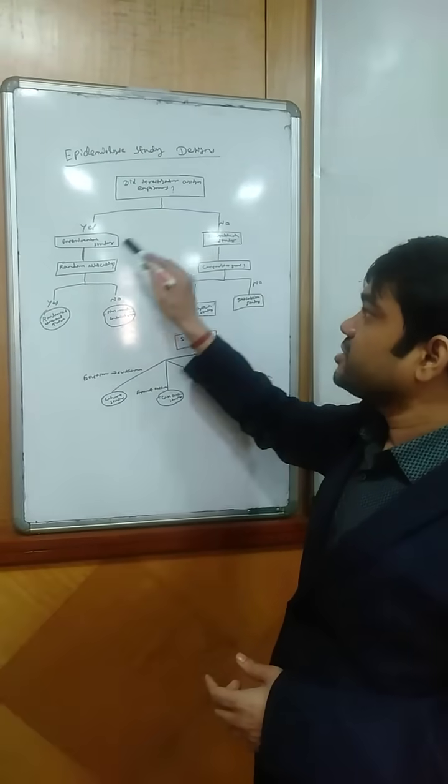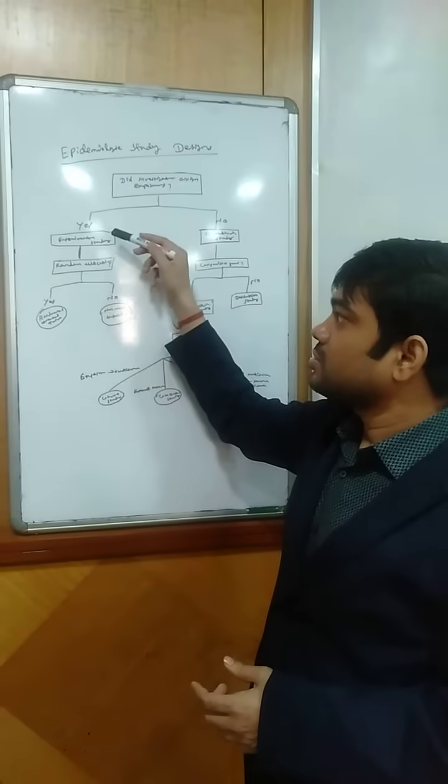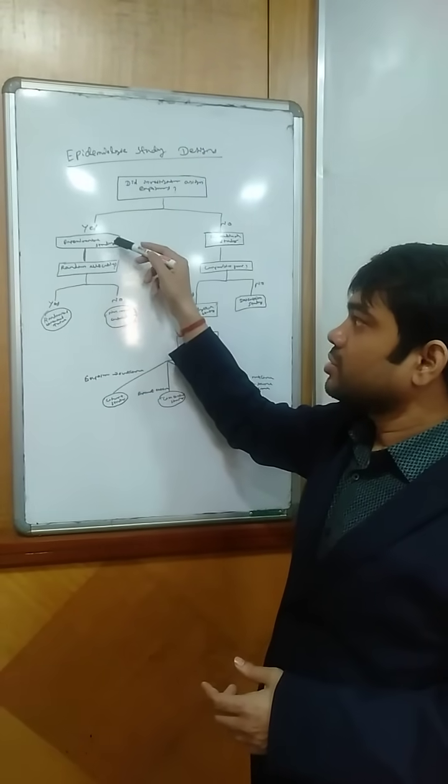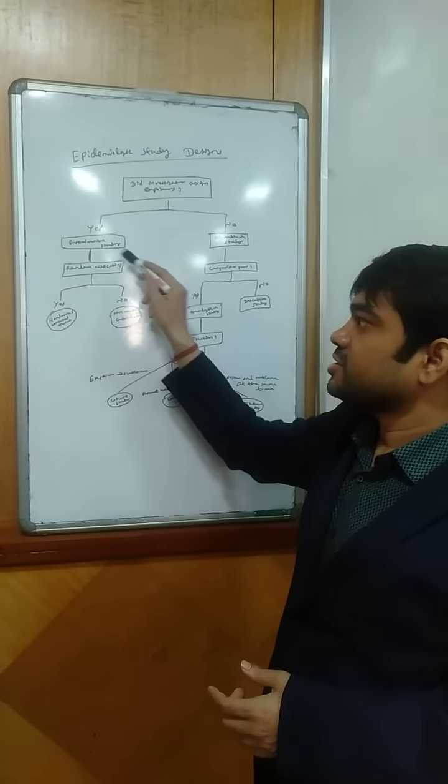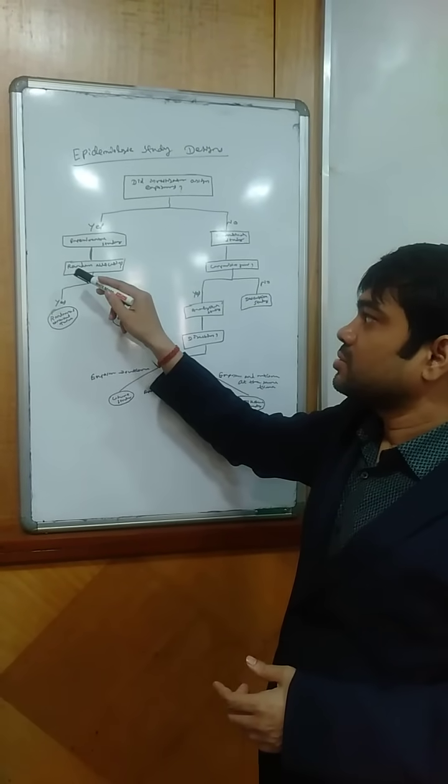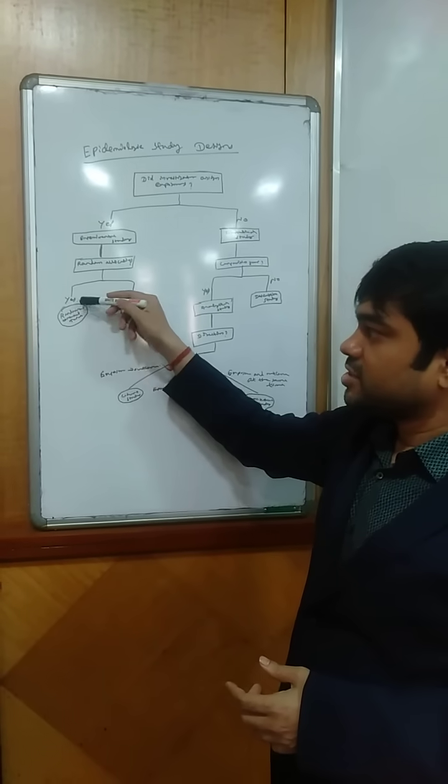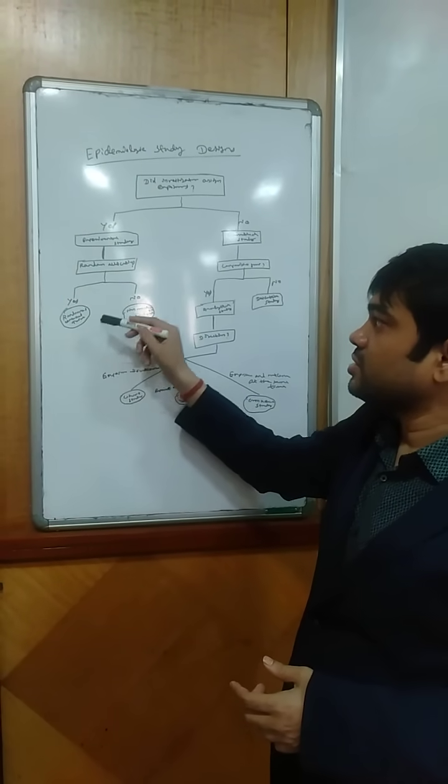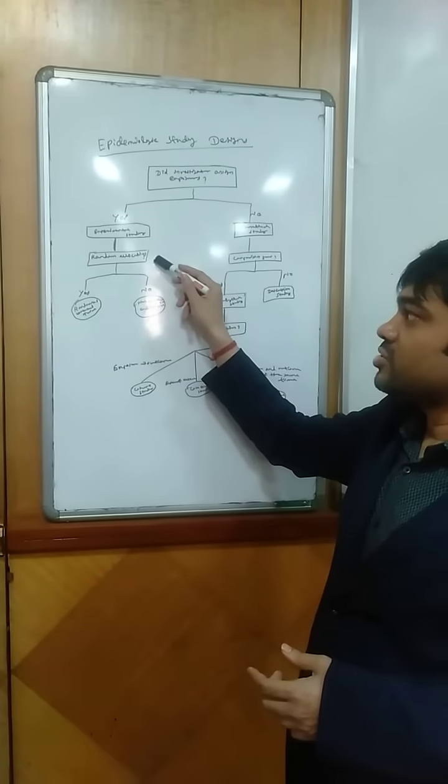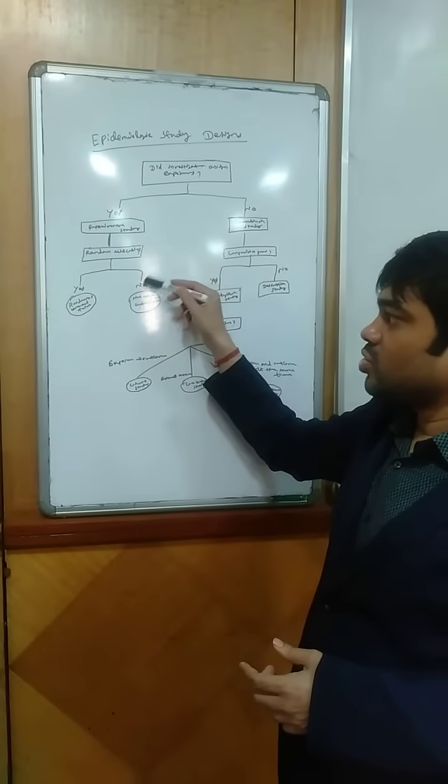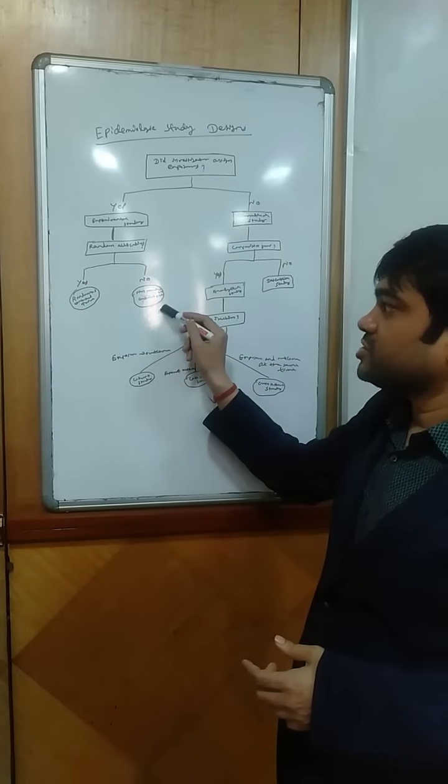In case of experimental study, is there any random allocation? If there is random allocation, then it is a randomized controlled trial. If random allocation is not there, then it's a non-randomized controlled trial.